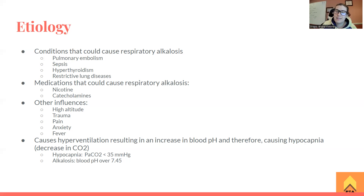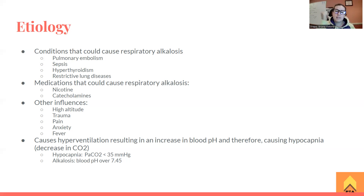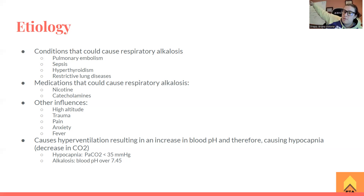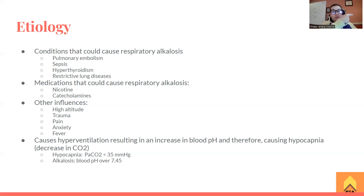We're seeing a decrease in the partial pressure of CO2 in the blood. Our normal range is 35 to 45 millimeters of mercury. What we're seeing in respiratory alkalosis is a decrease — less than 35 millimeters of mercury — that's hypocapnia: hypo meaning low, capnia meaning CO2. Alkalosis means blood pH is going to be over 7.45. The important thing to remember is whatever direction the blood pH is going, the partial pressure of CO2 is going the opposite way. If pH is going down, CO2 is going up. If CO2 is going down, pH is going up.